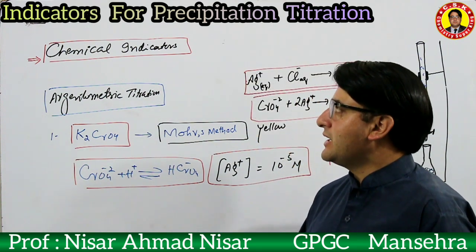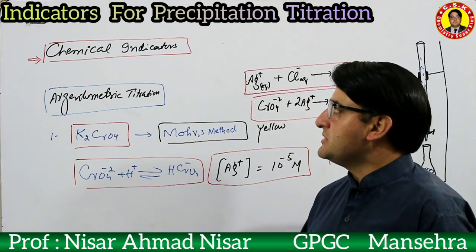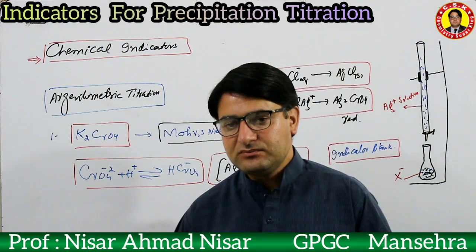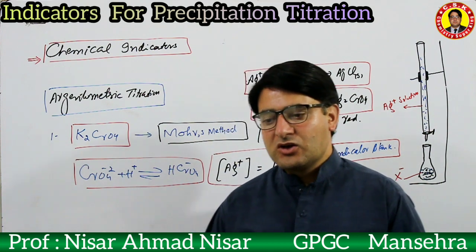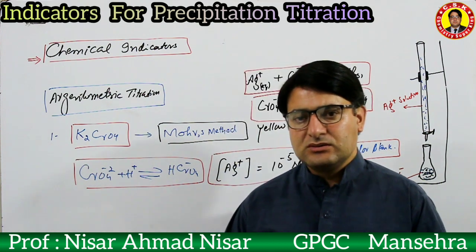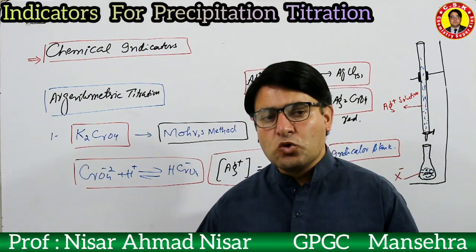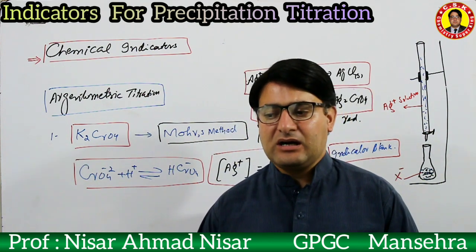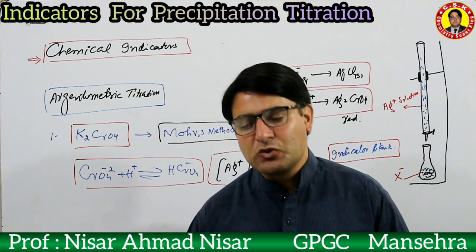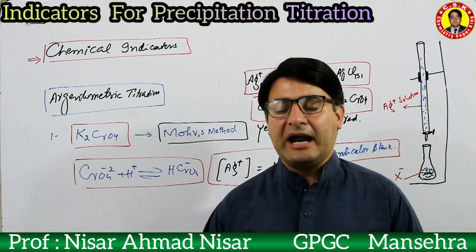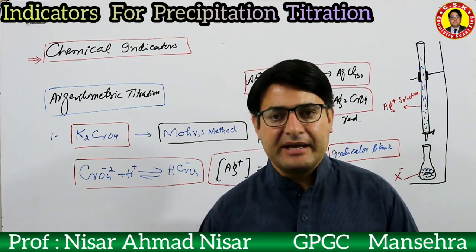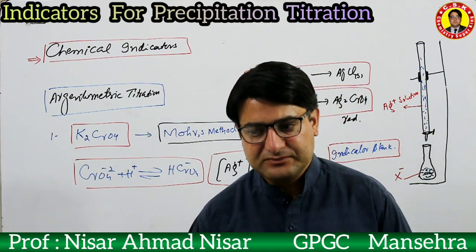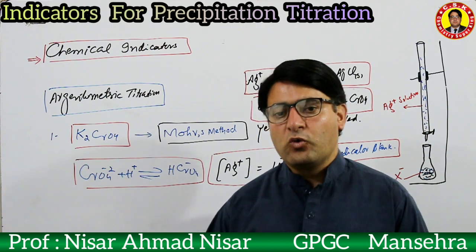Two categories of indicators are used to locate the end point in precipitation titration. One is called a chemical indicator and the other is called an adsorption indicator.